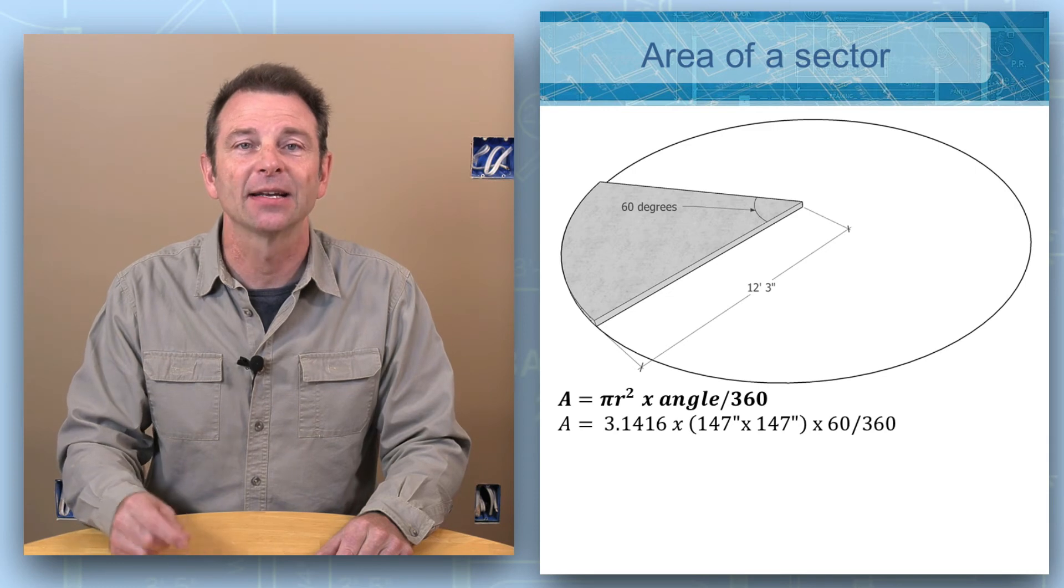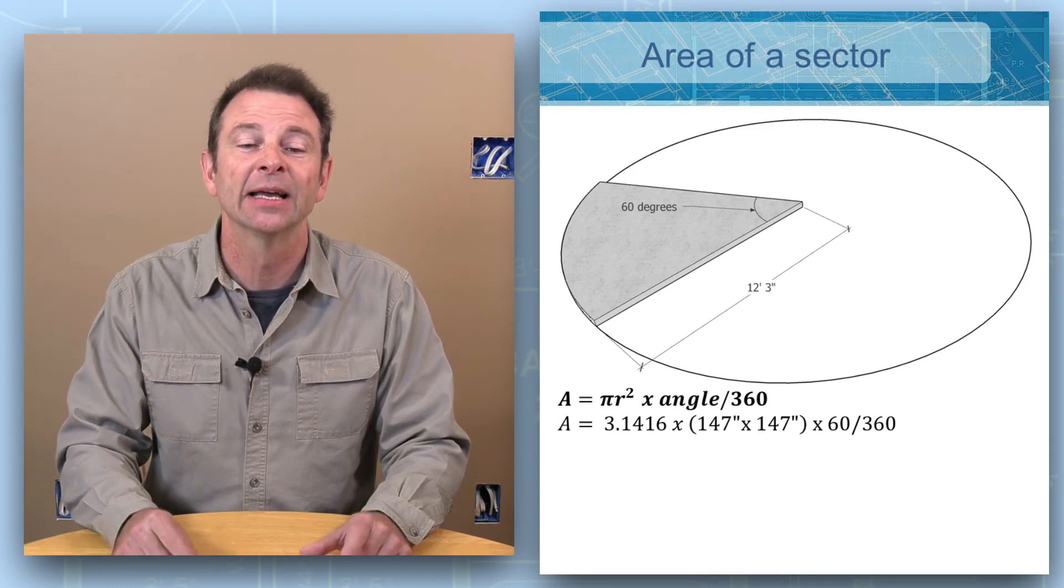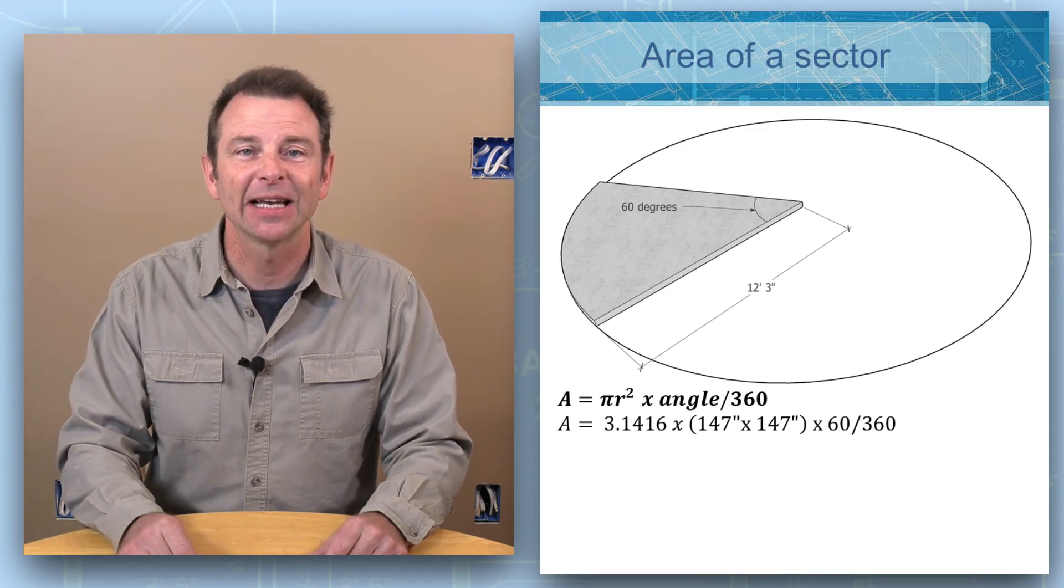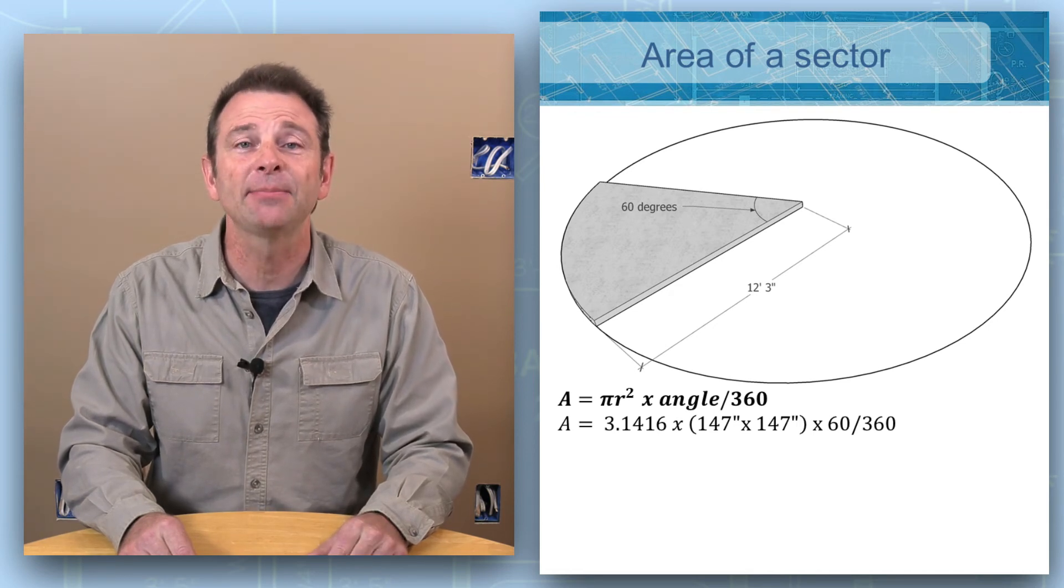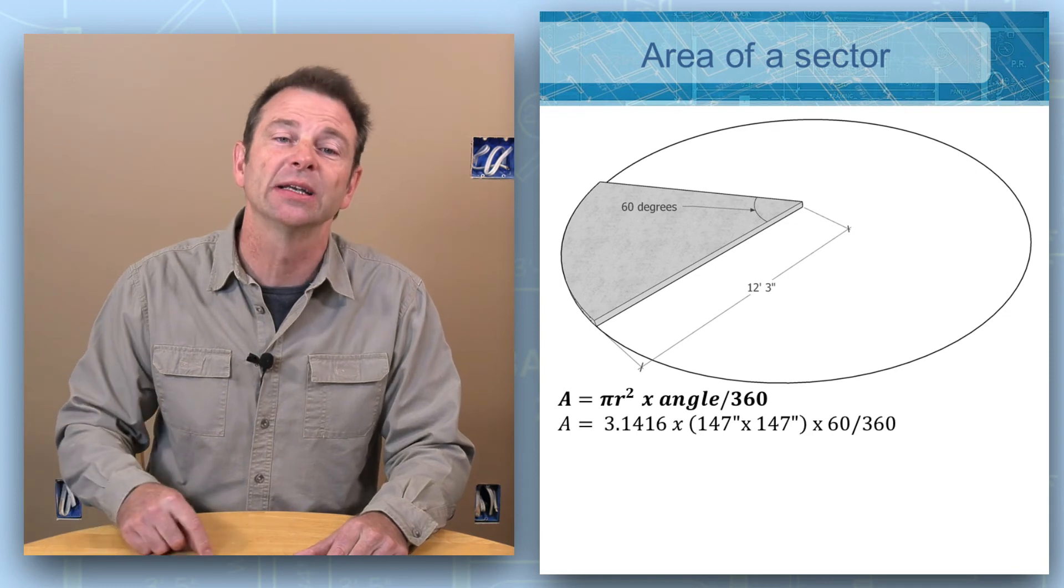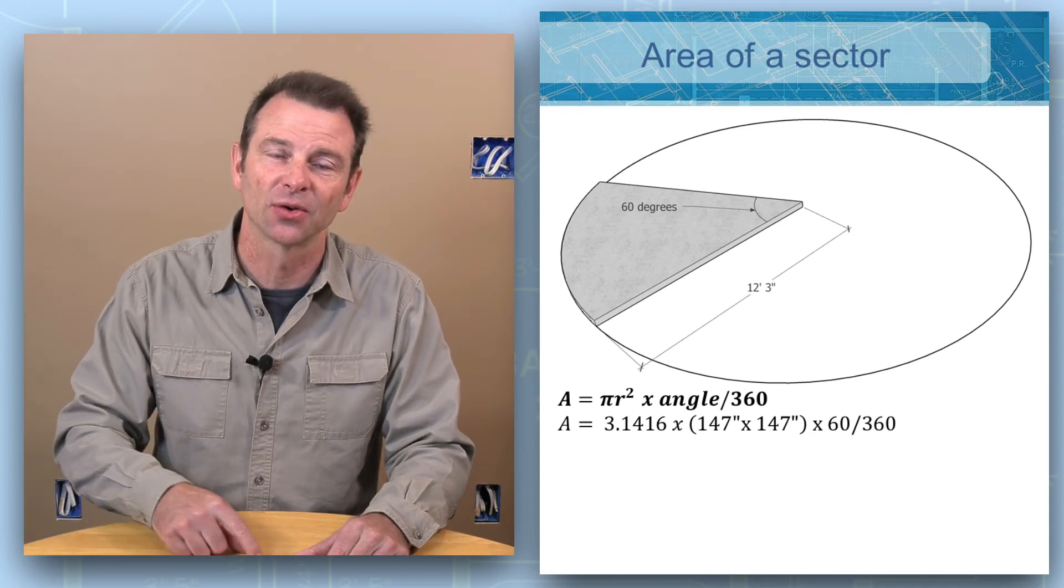...and we're adding another step, which is multiplying this times 60, which is our degrees of our wedge, divided by 360, which is the total degrees of the entire circle.